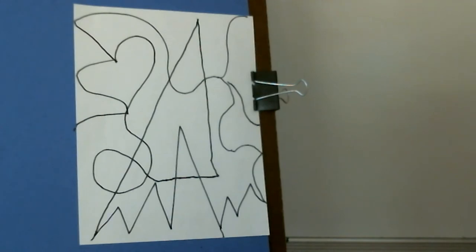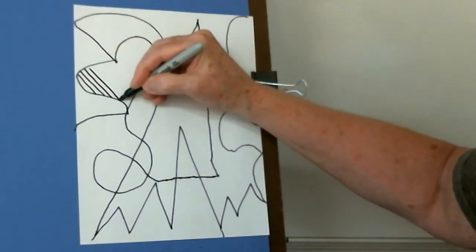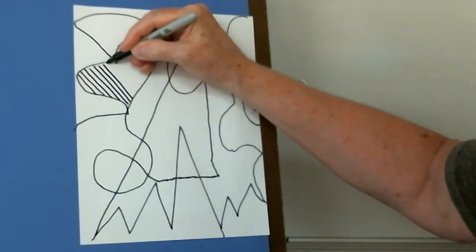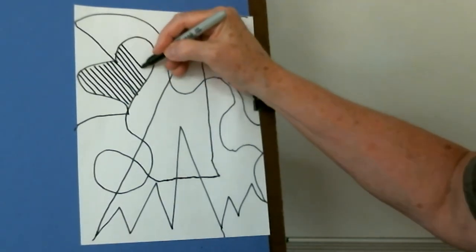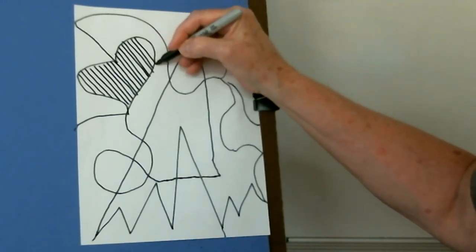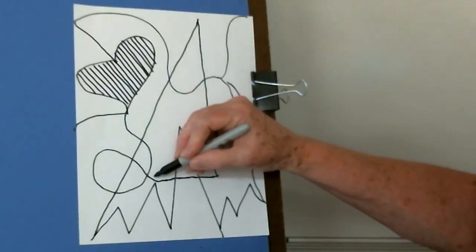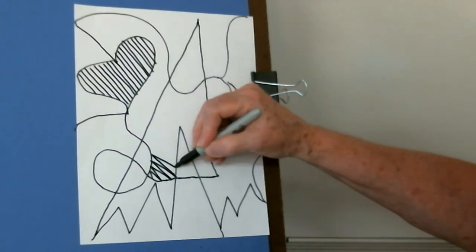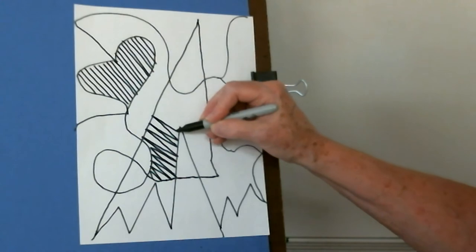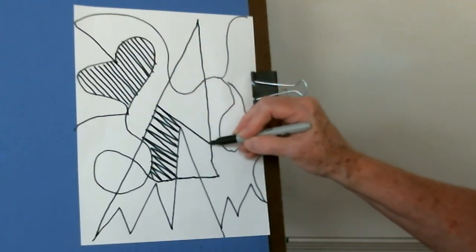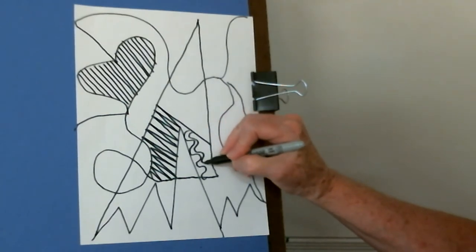And then we're going to add different lines in each one of the shapes. So like in this shape here, I might do some diagonal lines. You want your lines to be close together, so they make very pretty designs close together. I might fill this one in with zigzag lines. You want them kind of close together. I might stop right there. And in here I'm going to put some curvy lines. So you see, you're just adding little lines everywhere.